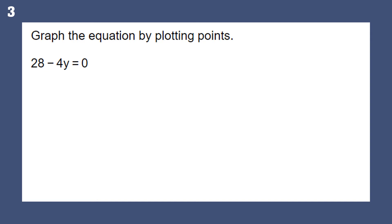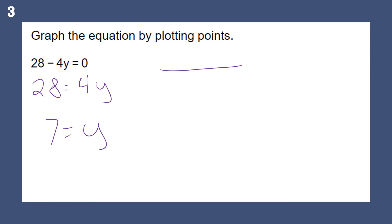Graph this equation by plotting points. Instead of making a big table, I want to solve for y to show what I'm seeing. If I solve for y by getting it by itself, I get 28 equals 4y — I added 4y to both sides. Divide by 4 and I get y equals 7. My y is always 7, no matter what x is.